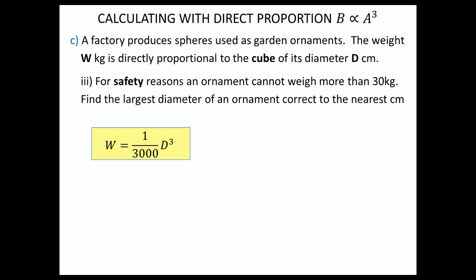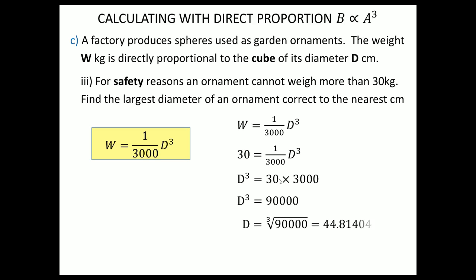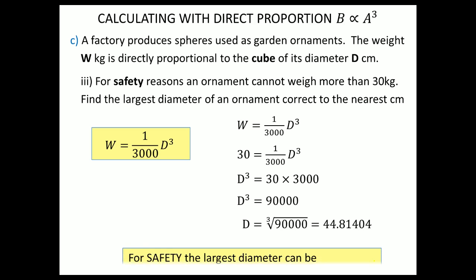So the equation is w = (1/3000)d³. For safety reasons an ornament cannot weigh more than 30 kg — find the largest diameter correct to the nearest centimeter. We put w = 30: 30 = (1/3000)d³, so d³ = 30 × 3000 = 90000. Taking the cube root gives d ≈ 44.81 cm. Correct to the nearest centimeter the largest it can be is 44, because rounding up to 45 would exceed the safety limit.